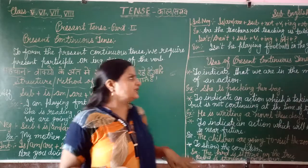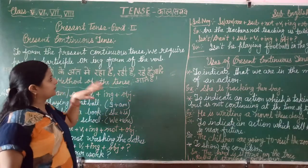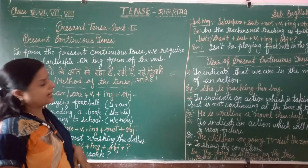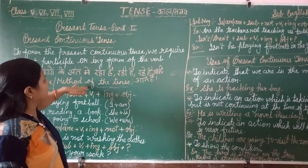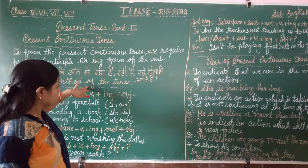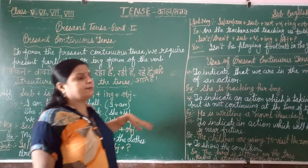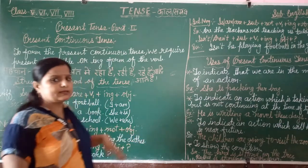The difference between the continuous and perfect continuous is that in continuous tense there is no given time, and in perfect continuous tense the time is given.